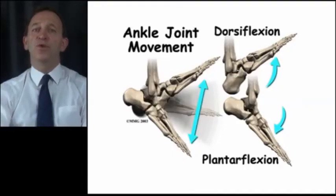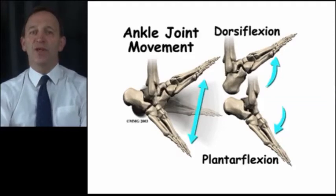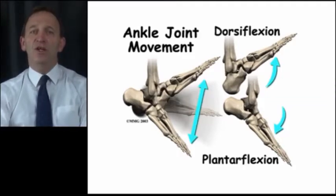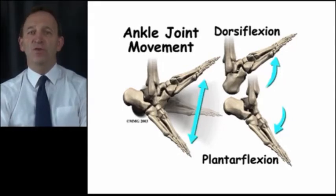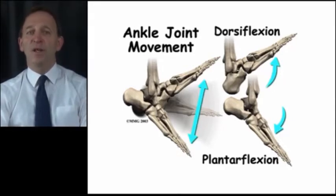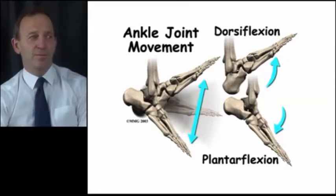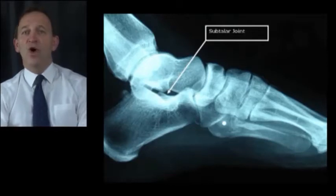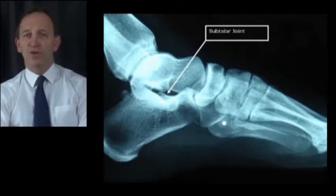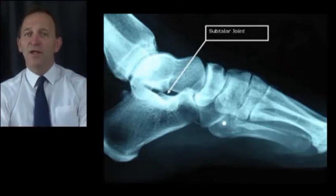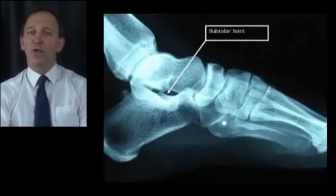The ankle joint is a mortise and tenon joint and acts as a hinge, with a large tendon — the Achilles tendon — controlling extension through the muscles of the calf, whilst a complex of tendons and muscles work in front to flex the front of the foot. The ankle joint sits on and above the subtalar joint which allows the ankle to rock from side to side, a movement necessary to allow walking on uneven ground or on a slope.